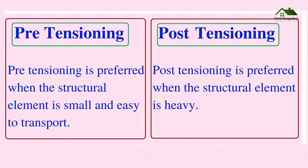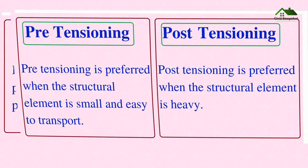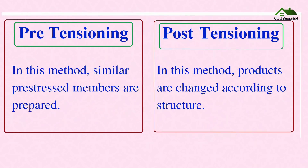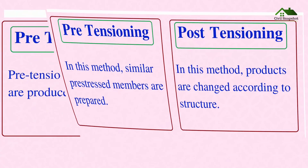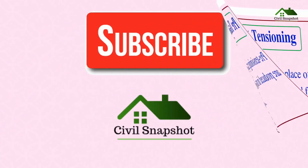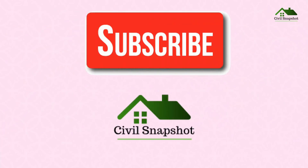In the pre-tensioning method, similar pre-stressed members are prepared, whereas in the post-tensioning method, products are changed according to the structure. Pre-tensioning members are produced in a mold, while in post-tensioning, cables are used in place of wires and jacks are used for stretching.